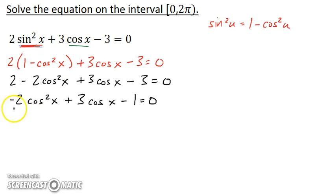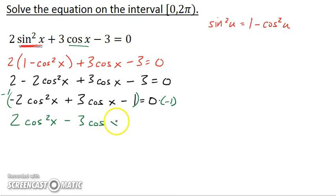In fact, in algebra class, when we had something squared, something, and a number, it often helped to have the something squared term positive. So if I think of multiplying each side by negative 1, I could simply change the sign of each term. So how about positive 2 cosine squared x minus 3 cosine x plus 1.